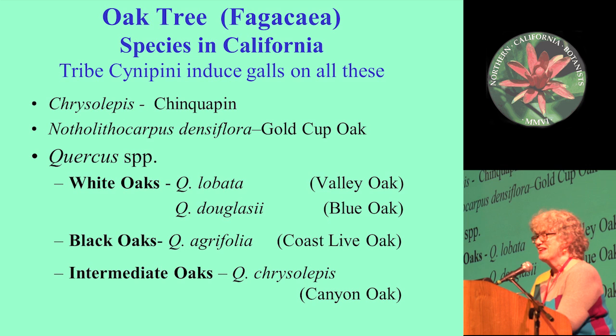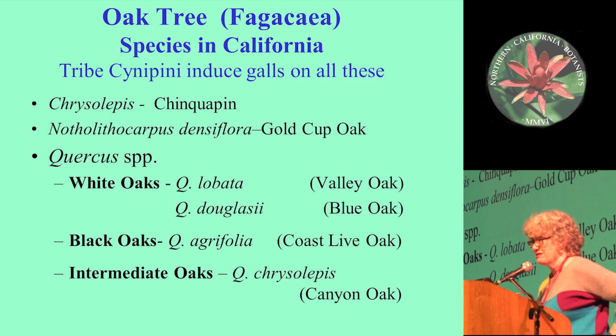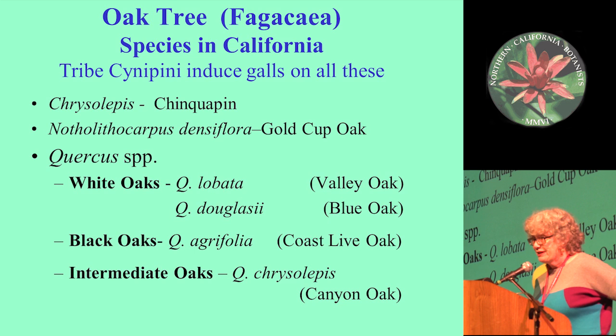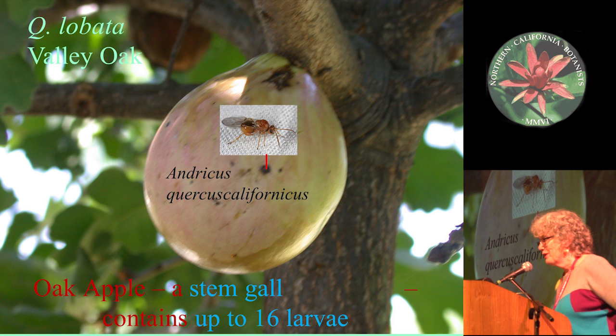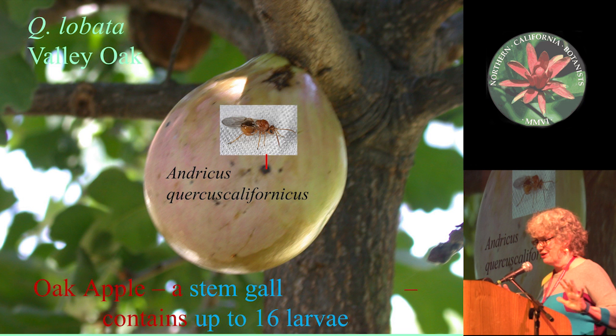Looking at the host plant: oak trees in the genus Quercus in California actually cover three different sections of that genus. That's the white oaks — the valley oak, Quercus lobata, and the blue oak, Q. douglasii. We'll be talking about black oaks, the second section, and only Q. agrifolia, the coast live oak. And finally, galls seen on the canyon oaks, the intermediate oaks.